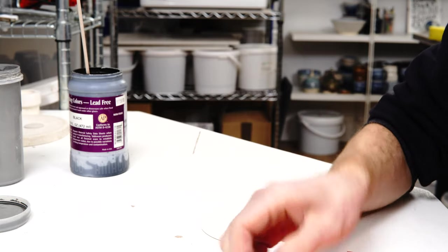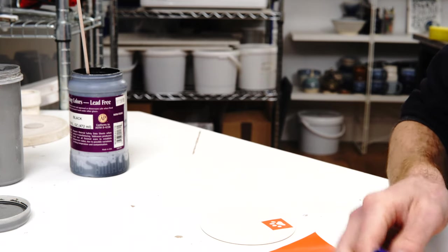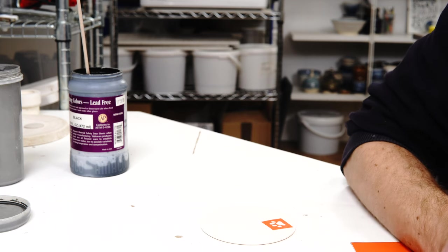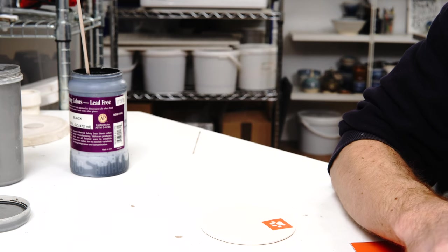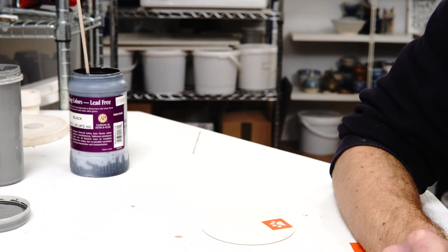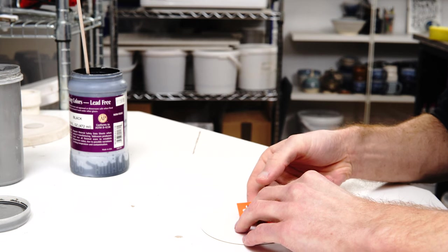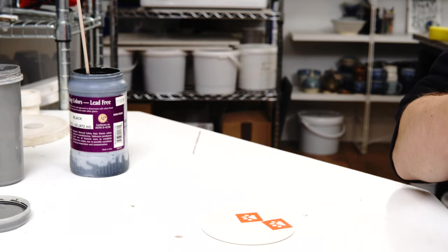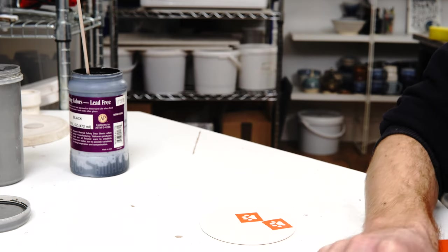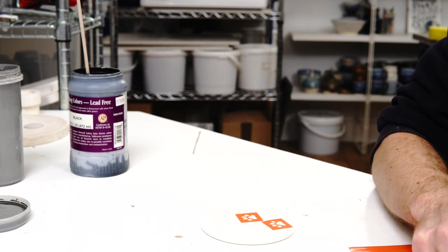I'm going to test underglaze on a bisque piece and slip on a greenware piece and the reason for that is very simple. Underglaze is formulated to not have much shrinkage. It's halfway between a clay and a glaze whereas my slip is just made of my normal clay. So if I paint the slip onto a bisque piece the clay will shrink, the bisque piece won't shrink at all and it will fall off.